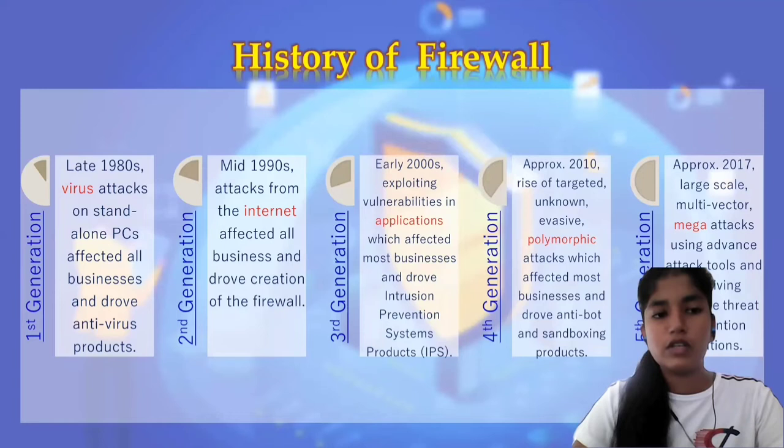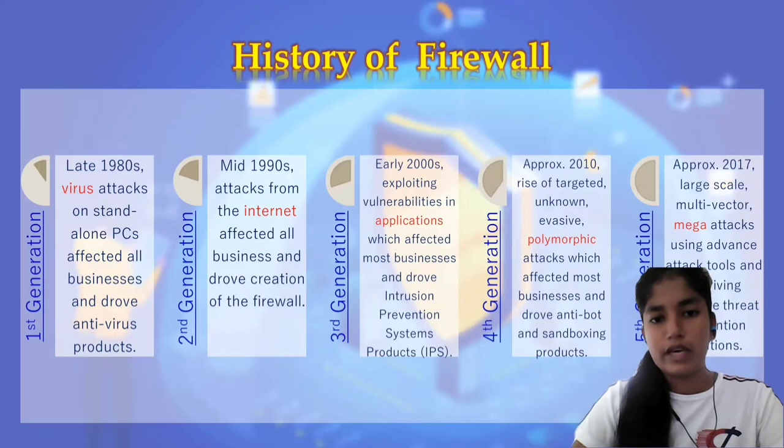Now I'm going to talk about firewall history. Firewalls have existed since the late 1980s and started out as packet filters for bytes transferred between computers. Packet filtering firewalls are still in use today. Firewalls have come a long way as technology has developed throughout the decades. Firewall history can be divided into five generations.